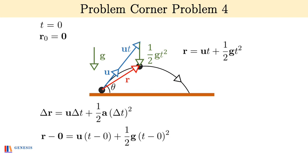You can physically think of this as follows: u vector into t is the displacement of the stone only due to inertia, that is its velocity u vector. Half g vector t square is the displacement of the stone only due to the gravitational acceleration g vector. And the net displacement r vector of the stone from its projection point is the vector sum of these two displacements.